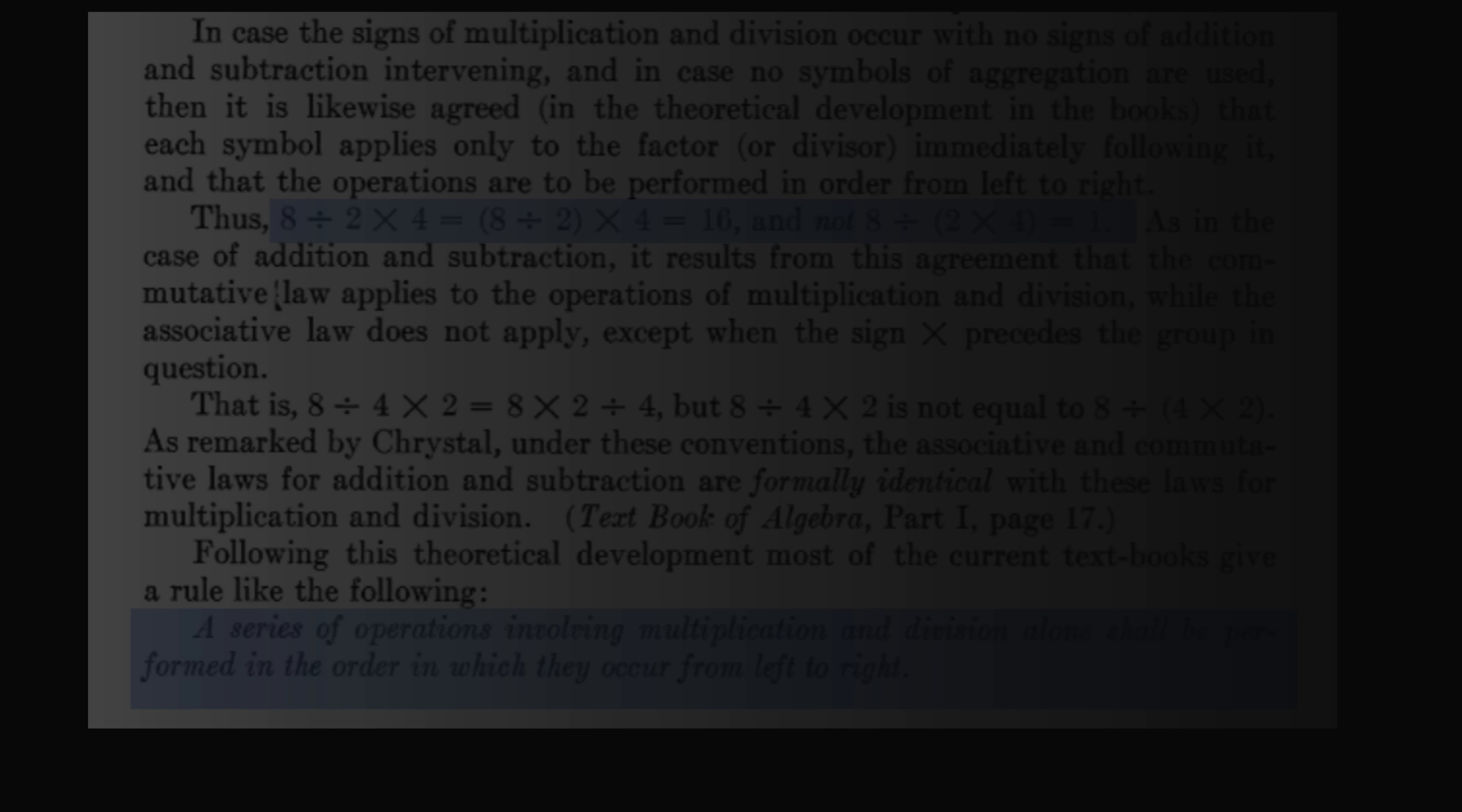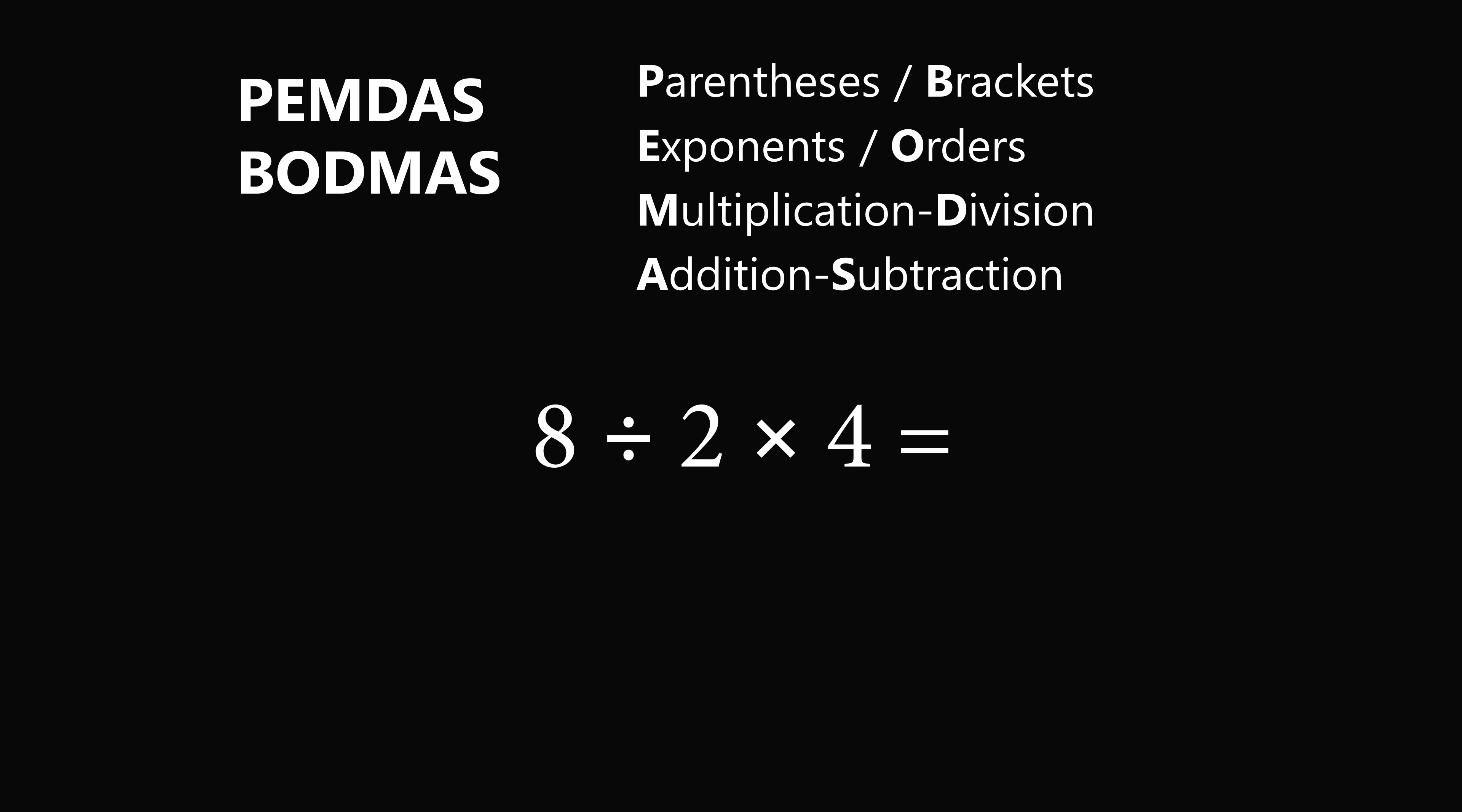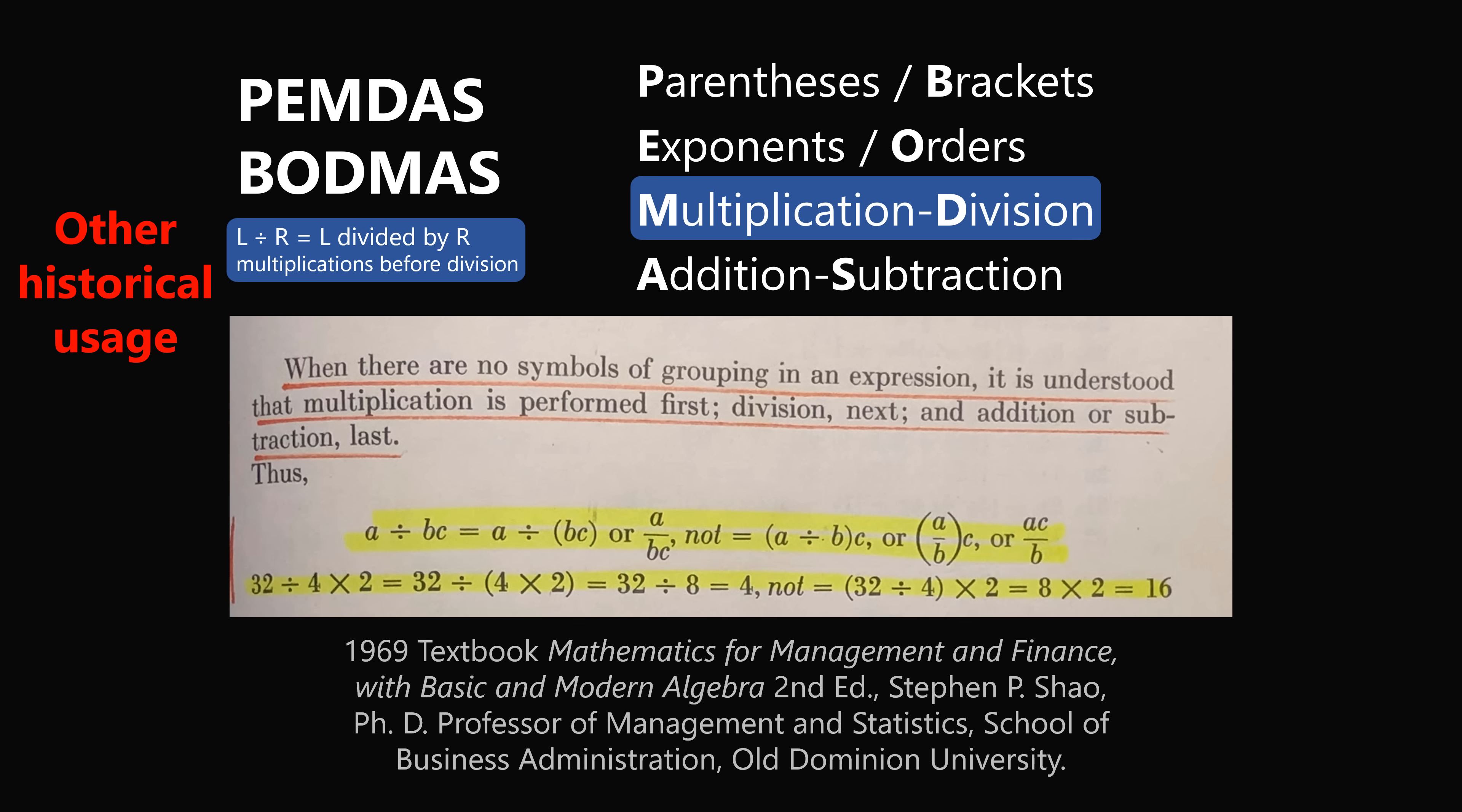But interestingly, there is always an exception that proves the rule. For years I've been asking someone to provide a reference to a historical usage. Many people have said, well, I've learned that if I've seen multiplication and division, we would take the left side and divide it by the right side. In other words, multiplications are done before division. And I want to thank Pete for actually providing me with a reference. This comes from a textbook that he used and he saved and he actually took a picture and sent it to me.